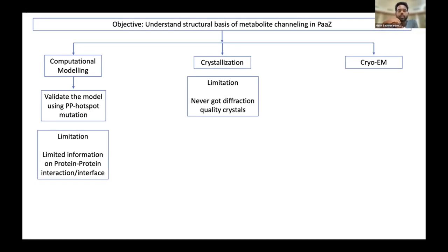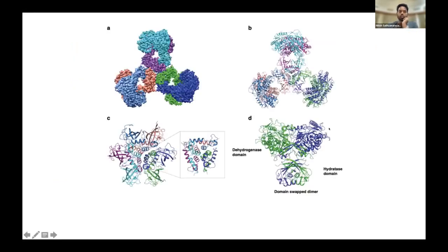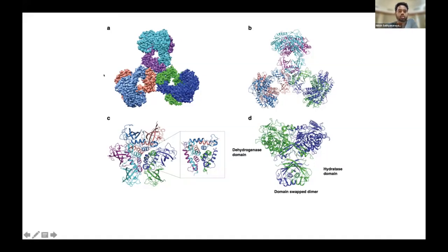We then turned to crystallization, but because the complex was quite large we never successfully obtained a crystal of diffraction quality. Finally we went to cryo-EM and obtained the structure. In the structure, what you see in blue is the aldehyde dehydrogenase domain and at the bottom is the hydratase domain. These domains are actually swapped: subunit A interacts with subunit B. These two dimers form a very complex structure to give a hexamer, with the whole complex held at the interface where all the hydratase domains come together.